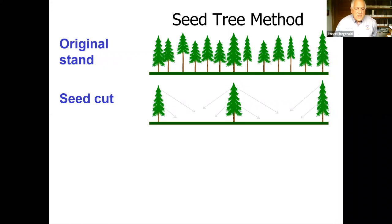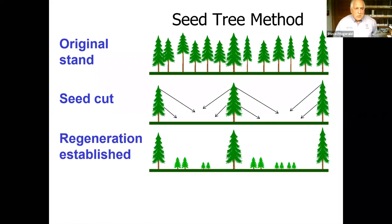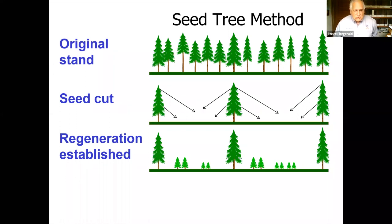The trees then throw seed and you get regeneration established. It's not quite as quick or easy as that nice diagram suggests. One problem is that cone production in Pacific Northwest tree species is highly irregular. Douglas fir produces abundant cone crops about every seven years or so. Ponderosa pine about every eight. Western larch — like you see over in Eastern Oregon — about every 12 to 15 years, and often cones have insects making seeds unviable. Sometimes trees are also planted to supplement natural seeding.